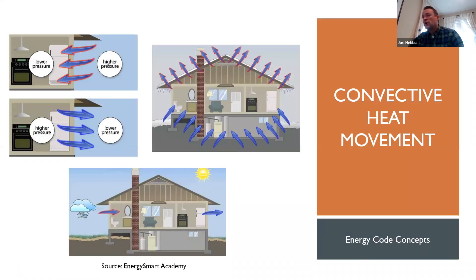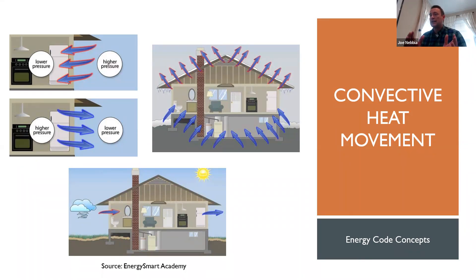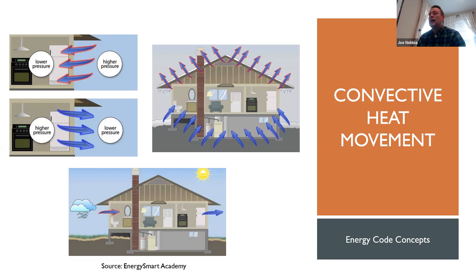With air sealing, a quick building science reminder: what we're trying to control is convective heat movement — heat moving with air movement. It's not conductive heat movement like we address with most insulation. Some insulation also stops convective heat movement if it's air impermeable. We're trying to stop heat loss because of air movement, whether it's heat loss from internal to external in the winter or heat gain in the summer. In a humid environment, we're also trying to stop moisture moving with that air. Air sealing doesn't solve all moisture movement problems, but it can help.